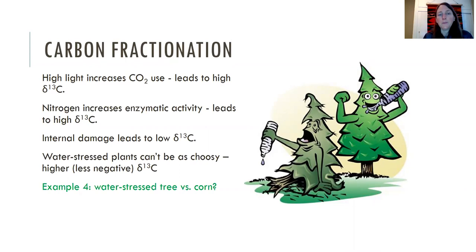So an example: you could ask, a water-stressed tree, that's a better example as a C3 plant—would be a tree, not grass. But in fact, I think grass is a C4 plant. So a tree, let's say you're eating like cashews versus corn, corn nuts. What would the C13 values for a water-stressed tree be versus corn, and could you tell them apart? So that would be example number four; you could try that out on your own.